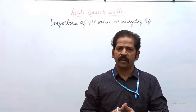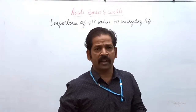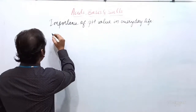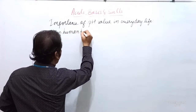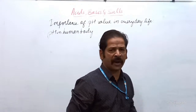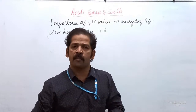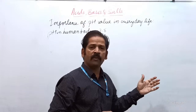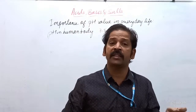pH value is very important in our life. When we look at the pH value in the human body, it raises from seven to eight. Almost all animals and plants also have this narrow range. I am using the word narrow range because the pH value scale starts from zero to fourteen.